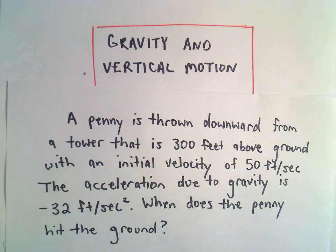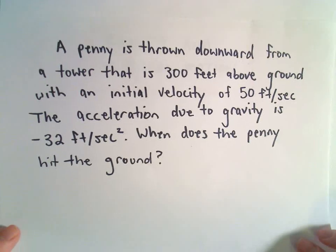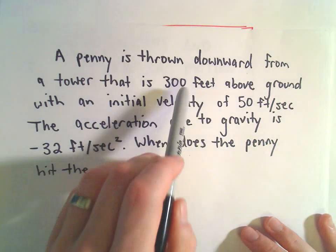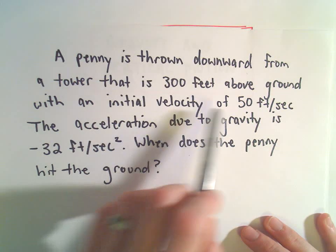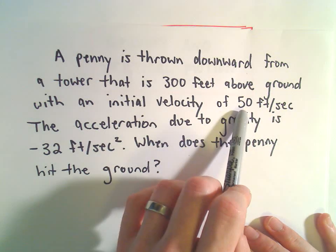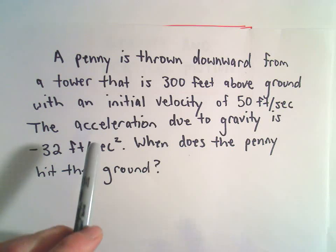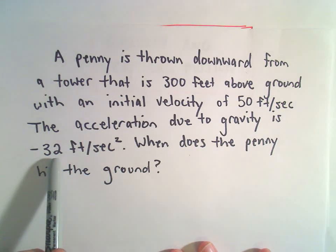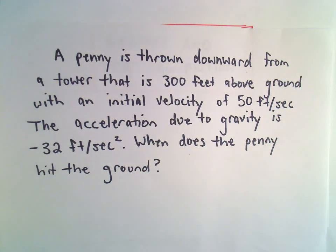In this video we're going to look at another problem involving gravity and vertical motion. We've got a penny that's thrown downward from a tower that's 300 feet above the ground, with an initial velocity of 50 feet per second. We know the acceleration due to gravity is negative 32 feet per second squared, and we want to know when does the penny hit the ground.